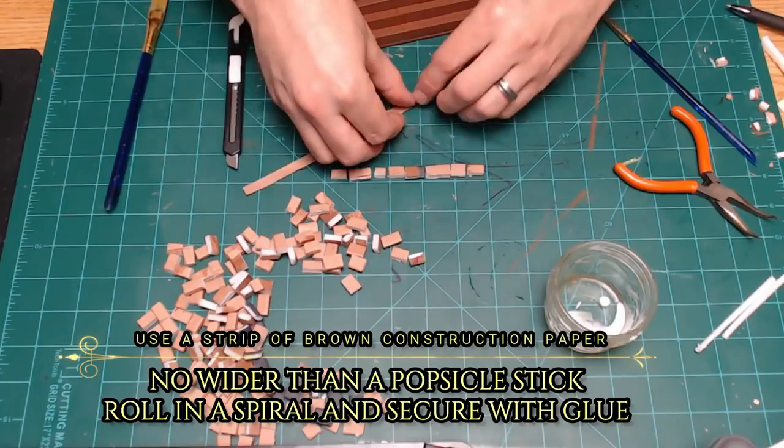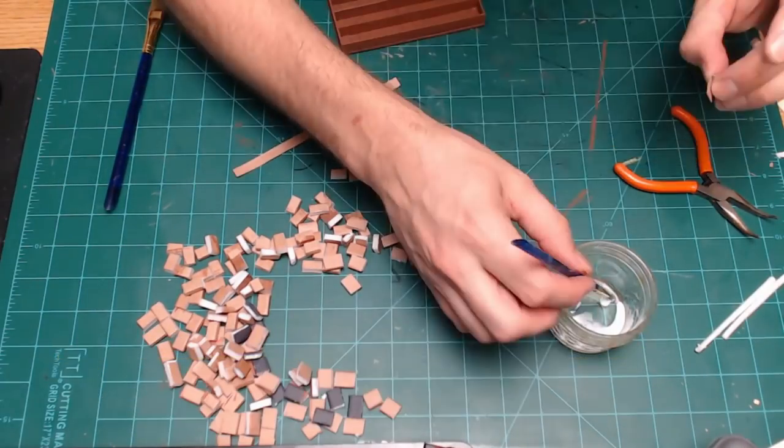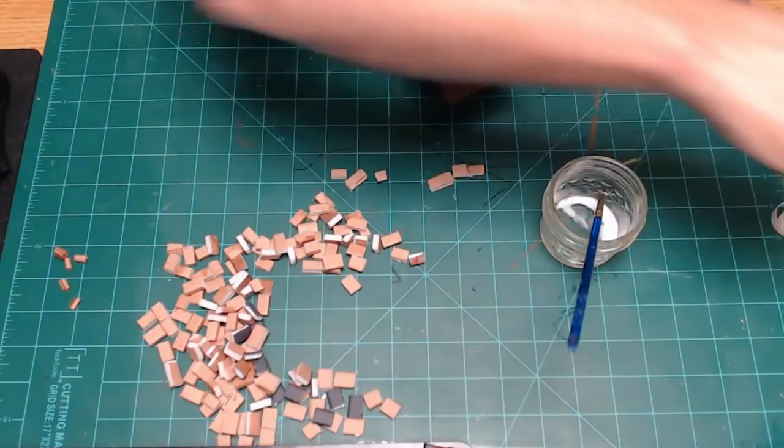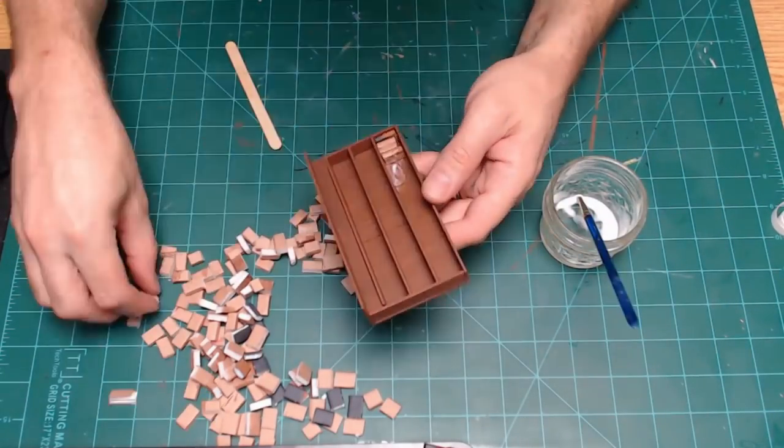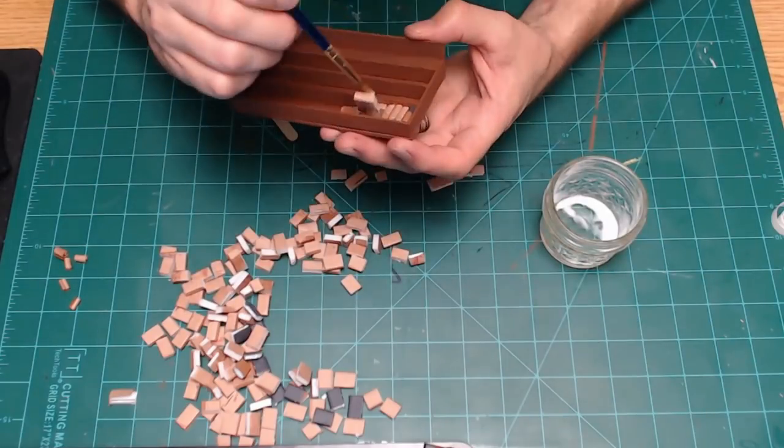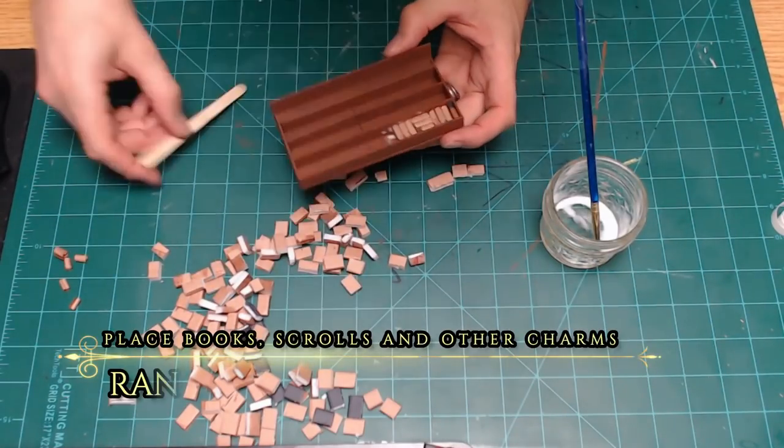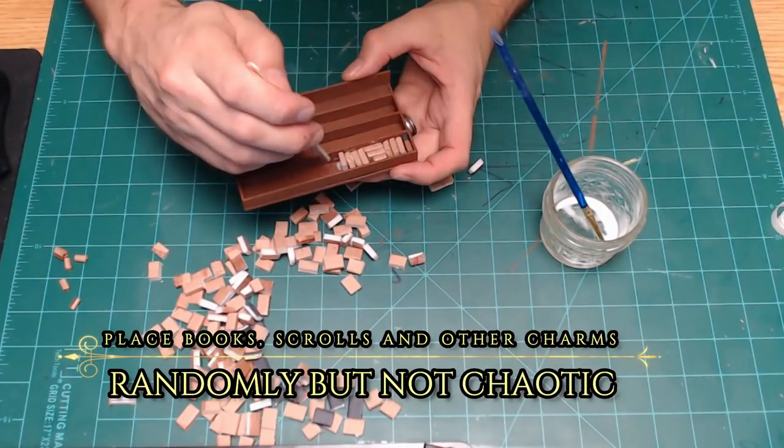Here I'm just using the same construction paper to make scrolls. Basically you're just going to cut them the same width as a popsicle stick, roll them up in your finger, and just lightly dab some glue on there to hold them secure so they don't open up.